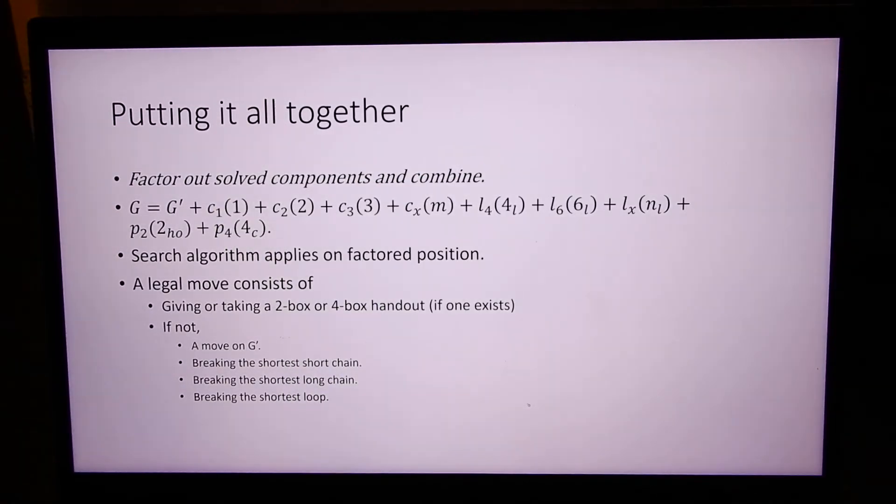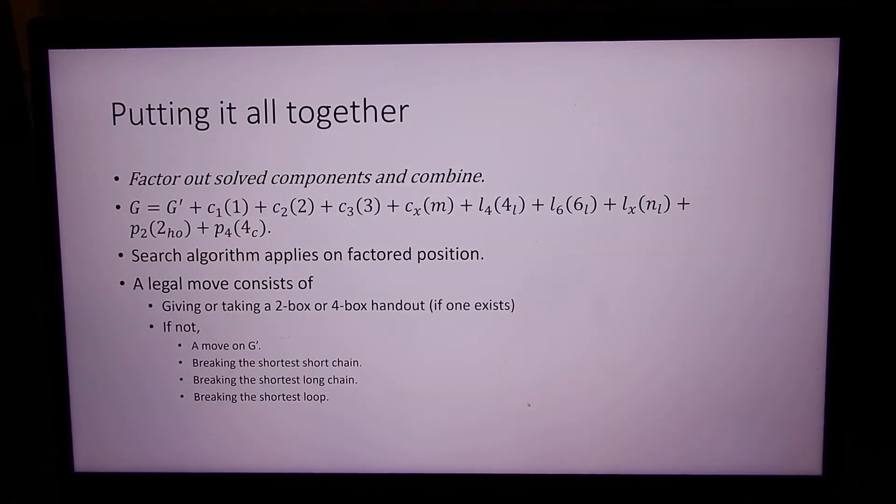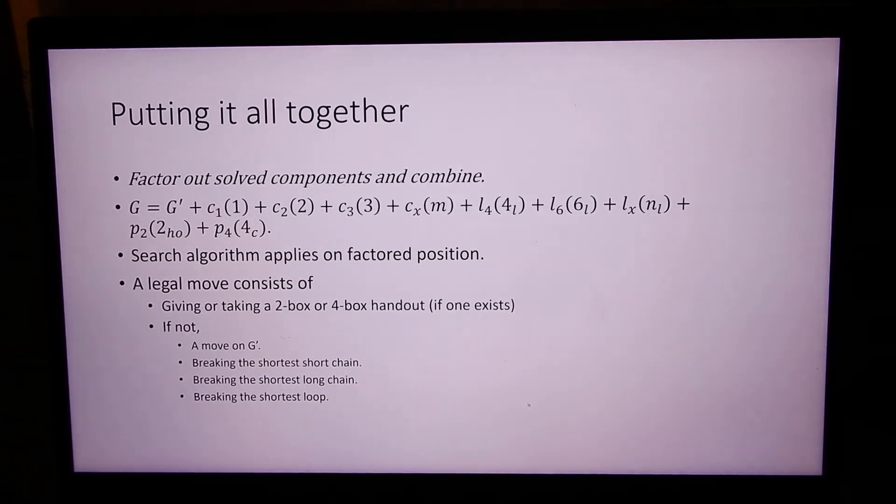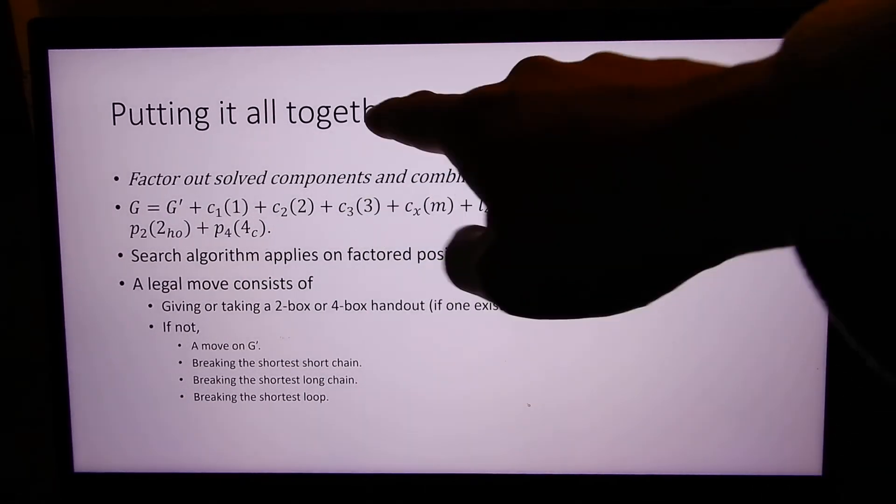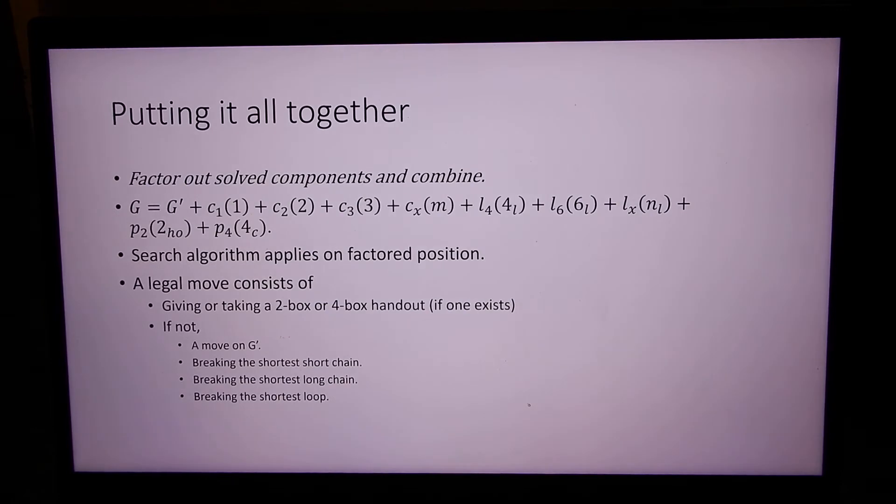We could have up to one chain of size one, because if we have two, it cancels out. We could have up to one chain of size two. We could have any number of chains of size three, actually, because they don't amalgamate. That's the only chain that could potentially be unlimited.